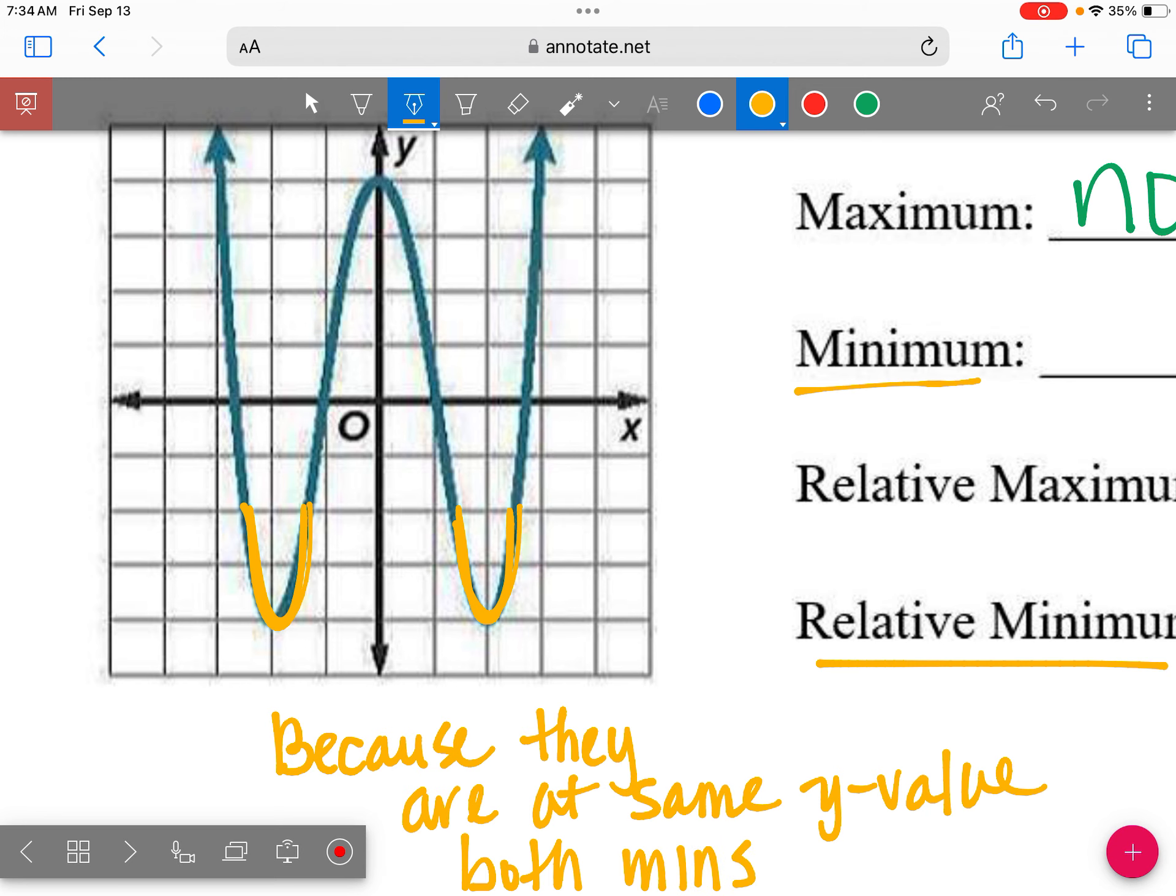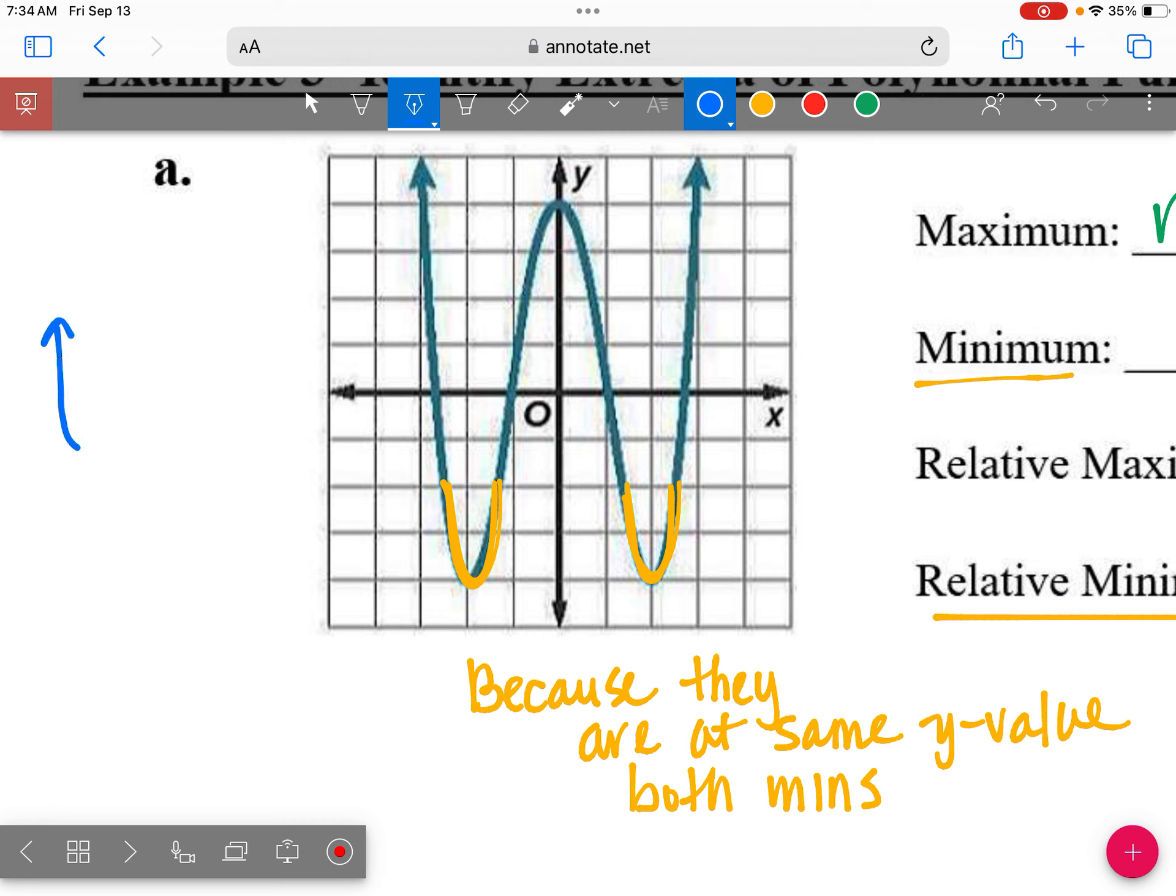Now, if it was one, I was trying to find one where if it was one where it was like one was lower. Does everyone see the difference? If it looked like this, where one was lower, then we would only have one minimum and two relative mins. But because these look like they're at the same place, we're going to list them both. All right. So let's go ahead and do that.